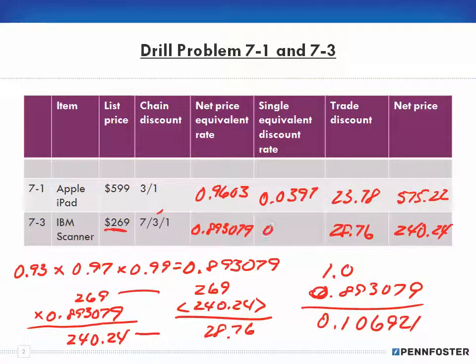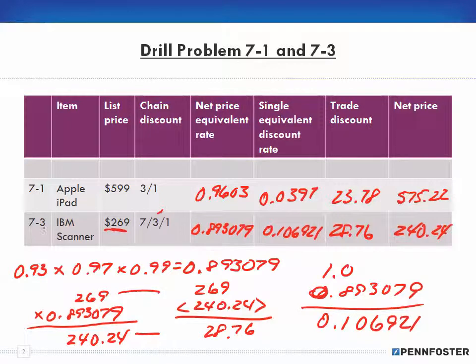So 0.106921 is the single equivalent discount rate — that's the math behind 7-3. If you need the theory, go back to the previous video and watch how I worked out 7-1.